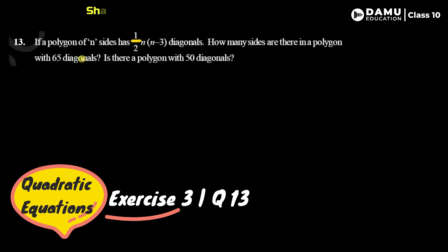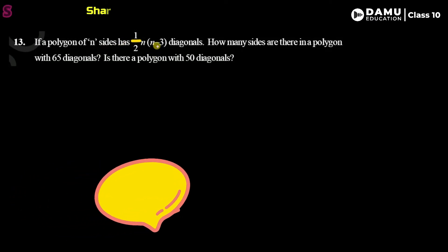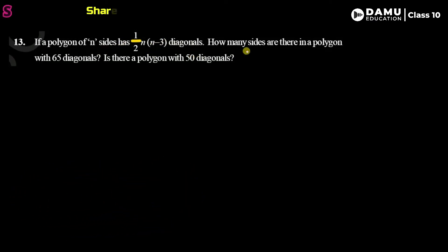What is the question? If a polygon of n sides has (1/2) × n × (n − 3) diagonals, how many sides are there in a polygon with 65 diagonals? And is there a polygon with 50 diagonals?